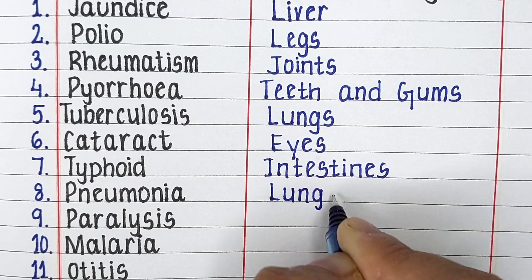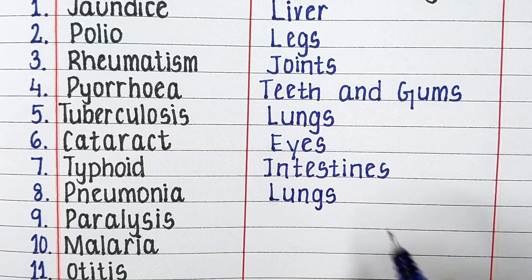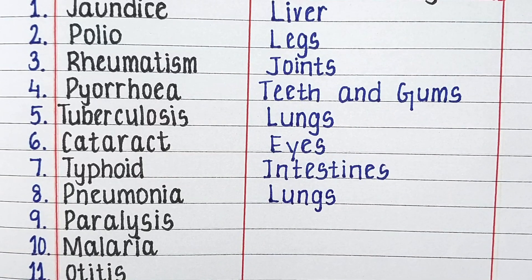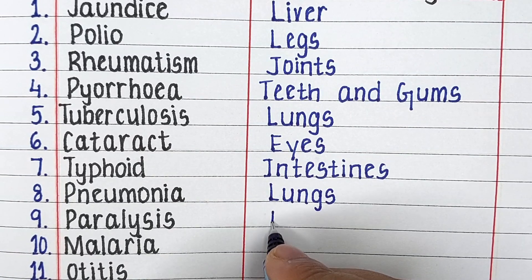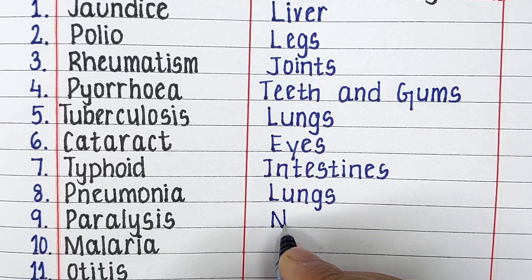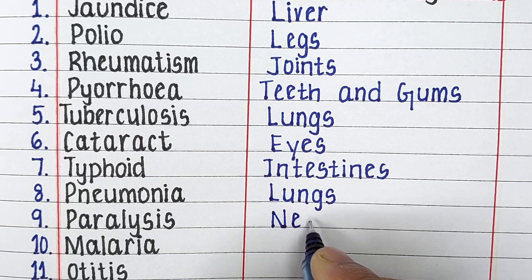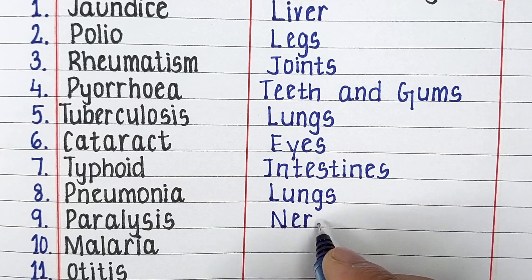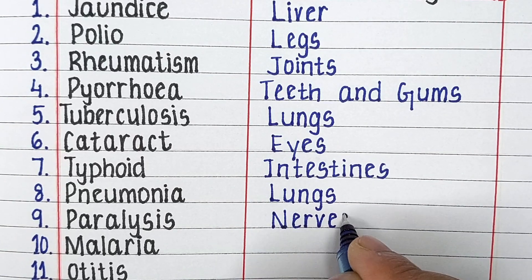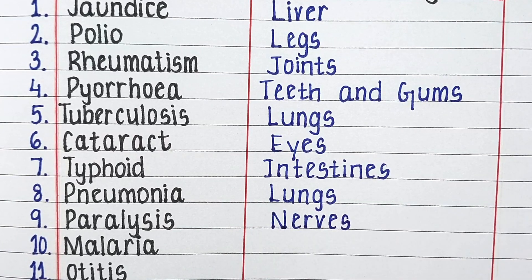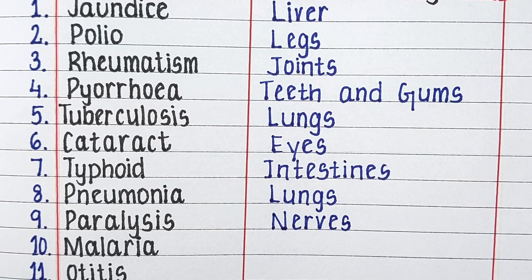Pneumonia primarily affects the lungs of the human body. Paralysis is a disease related to the nerves.